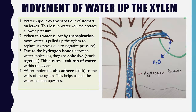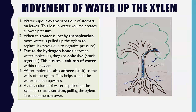Not only that, the water molecules also stick to the walls of the xylem. This helps because as the column is being pulled upward, adhesion to the walls means the water is less likely to fall back down due to the force of gravity.